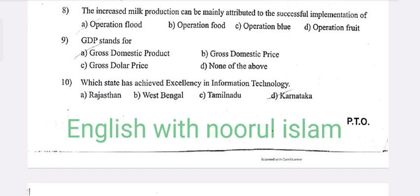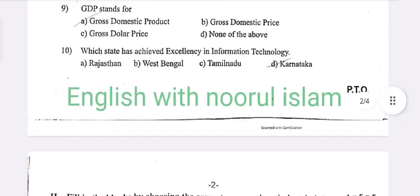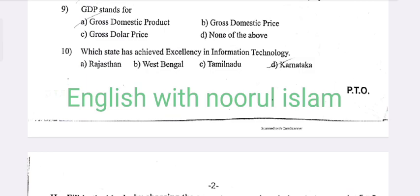Eighth question: The increased milk production can be mainly attributed to the successful implementation of Operation Flood. Ninth question: GDP stands for — option A, Gross Domestic Product.